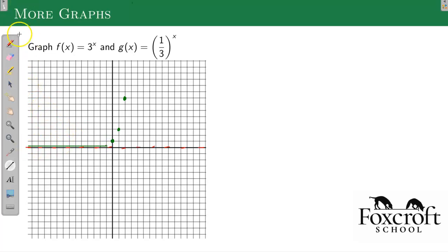It's not exactly a flat line, but that's just the easiest way for me to draw it on my tablet. And then once I hit zero, I shoot up like that. That's 3 to the x.